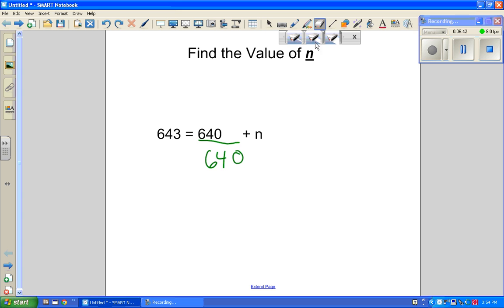Now, I have 640 plus n. That makes it a lot easier to look at this and say, for these to be the same, I'm going to have to add 3. And that also tells me that n has to be 3, because 640 plus 3 will equal 643. So n equals 3.